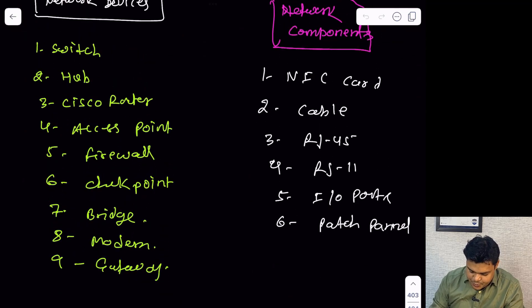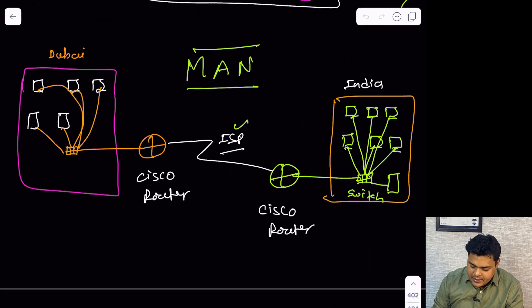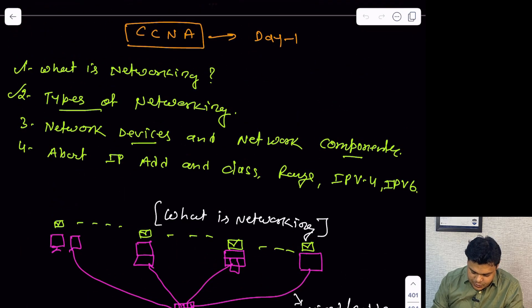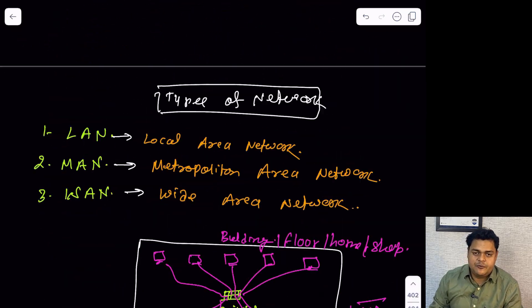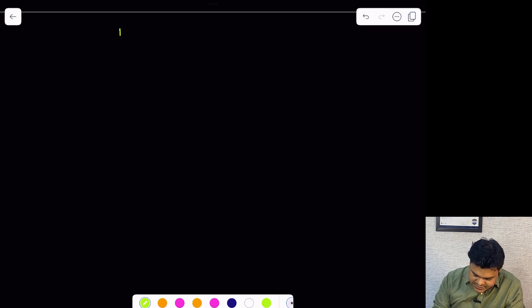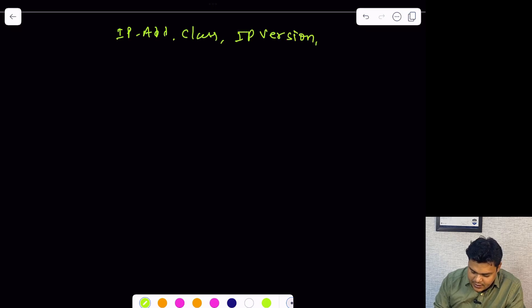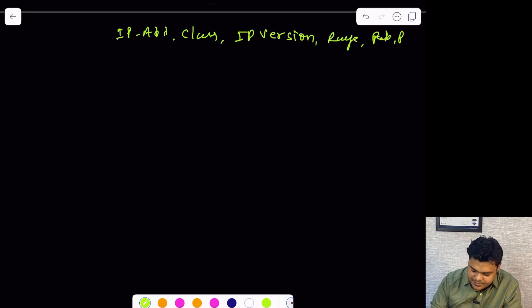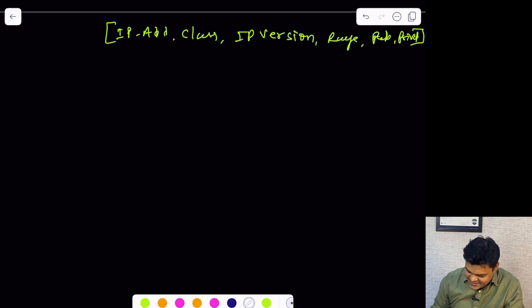We are on the IP address page. We will discuss about these points: devices and components, IP address management, IP address class range, IPv4 and IPv6. These are all the points I am going to cover in this class: IP address, IP address class, IP version, range of IP address, public and private, and CIDR calculation.